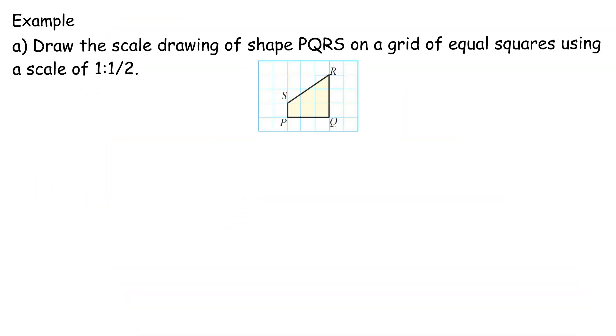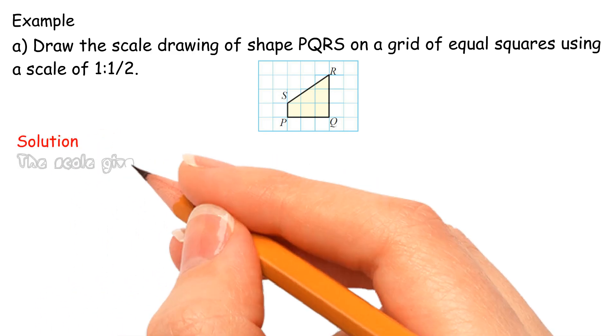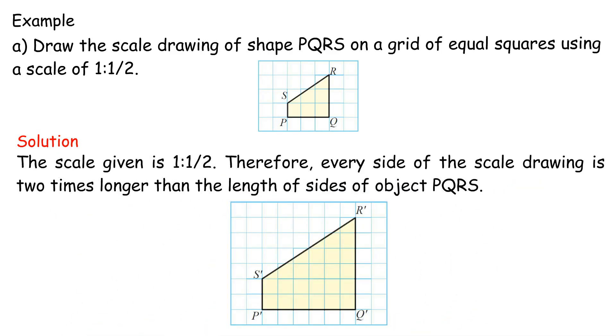Example A: Draw the scale drawing of shape PQRS on a grid of equal squares using a scale of 1 is to half. The scale given is 1 is to half. Therefore, every side of the scale drawing is 2 times longer than the length of sides of object PQRS.